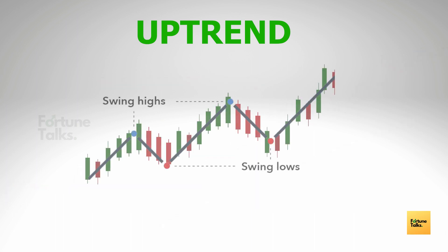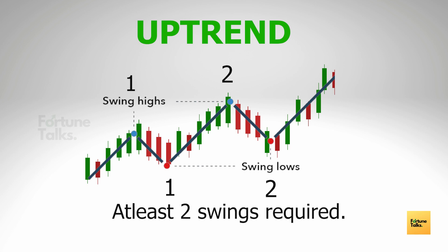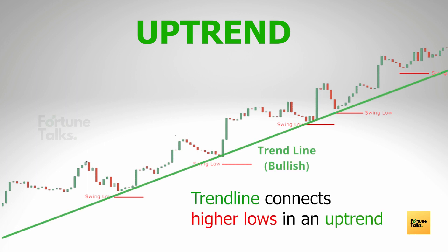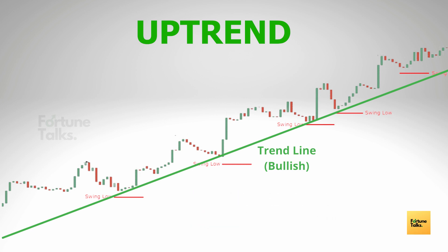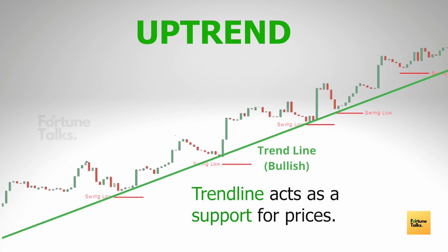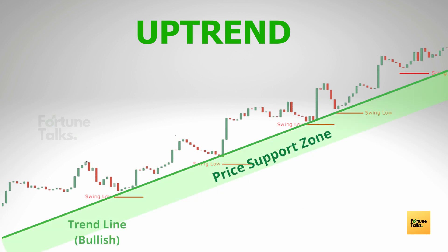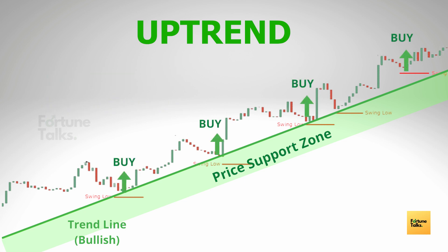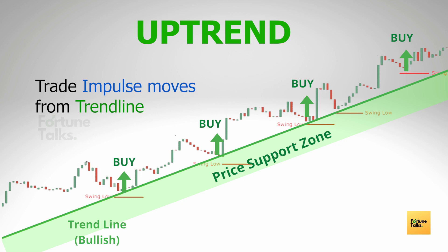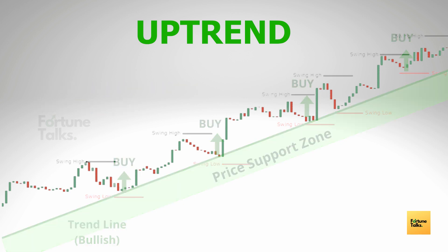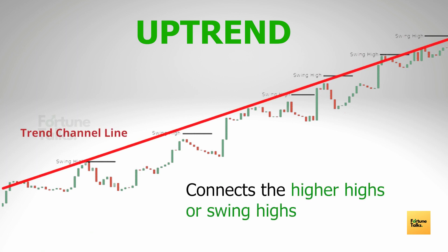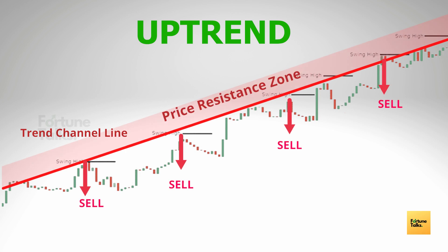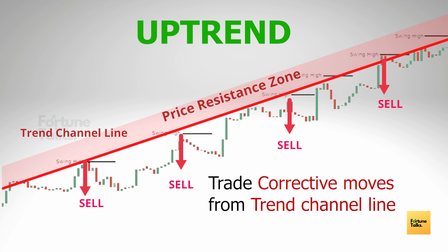Corrective moves are generally due to profit booking by some traders. A trend can be confirmed as an uptrend only when the price has made at least two swings on the upside. After finding all the higher lows, we draw a line connecting them — this is called the trend line, which acts as a support level and an area of value from which we can place buy orders. Connecting all the higher highs gives the trend channel line, which acts as resistance from which we can trade corrective moves or place sell orders.